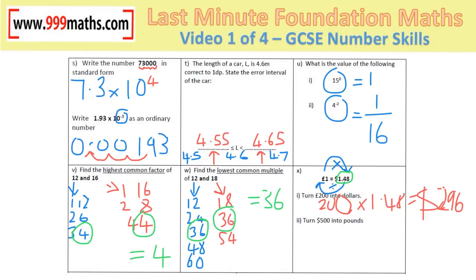Part 2 requires turning 500 dollars into pounds: dollars to pounds on the loops is a divide. Doing this on a calculator and rounding to 2 decimal places because it's money gives £337.84.